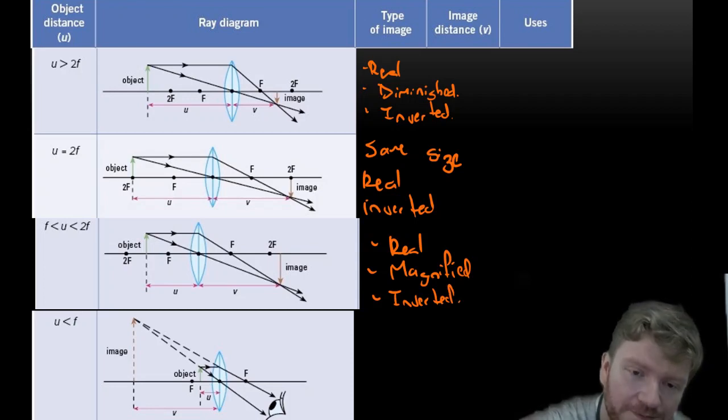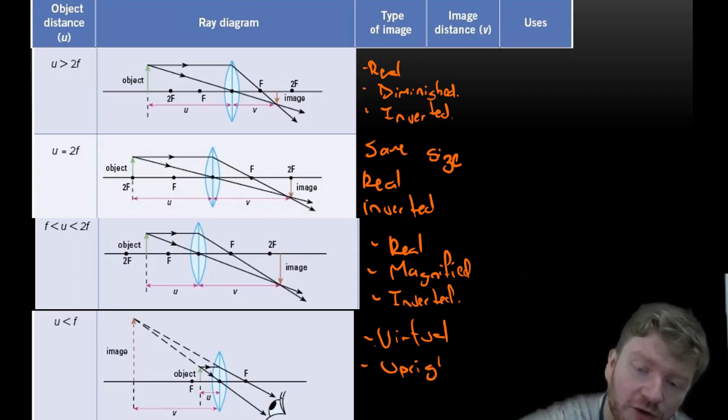And the last one. This one is a virtual image because the object is on the same side as the image. It is upright because the arrow is pointing in the same direction as the object, and it is magnified because the image is bigger than the object.